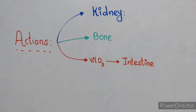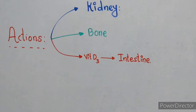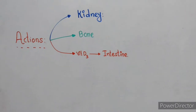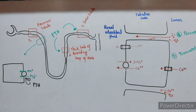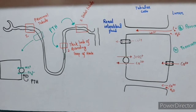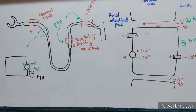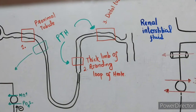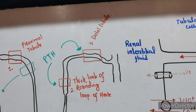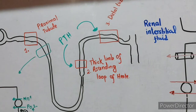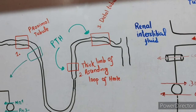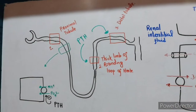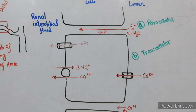Parathyroid hormone exerts its actions on three organs: the kidney, bone, and intestine — the latter indirectly via vitamin D3. In the kidney, parathyroid hormone increases calcium reabsorption from the renal tubules and decreases phosphate reabsorption. Calcium is reabsorbed mainly from three regions: the proximal tubule, the thick limb of the ascending loop of Henle, and the distal tubule. Parathyroid hormone increases calcium reabsorption in two of these regions — the thick ascending loop of Henle and the distal tubule.